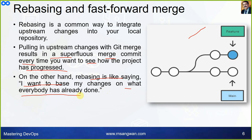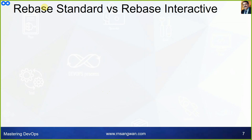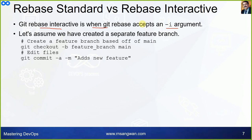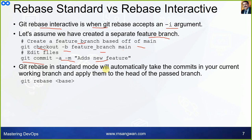Rebase standard versus rebase interactive. Git rebase interactive is when git rebase accepts the -i argument, which makes it interactive. Interactive means you will decide — there are single character commands. Let's assume you created a separate feature branch: git checkout -b feature-branch main. Now edit some files and commit them. In standard mode, git rebase will automatically take the commits in your current working branch and apply them to the head of the passed branch. That command is git rebase <branch-name>.